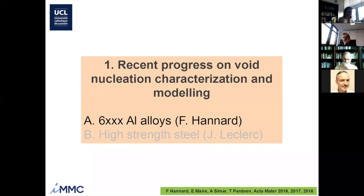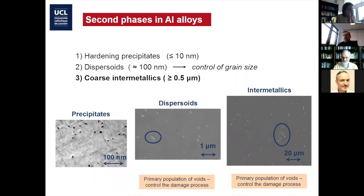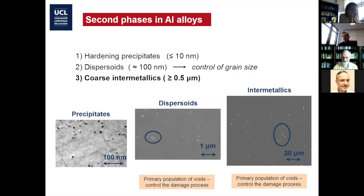So let me start with the work of Florent. Florent has been working on 6000 aluminum alloys. To remind you of the typical constituents in most aluminum alloys: at a very small scale we have the hardening precipitates at nanometer scale; at an intermediate scale we have the dispersoids, essentially there to control grain size, in a range of 100–200 nanometers; and then the intermetallic particles, which if we could we would avoid, but they are there for different reasons — typically in the micron size range.